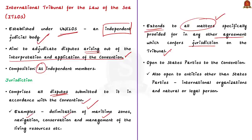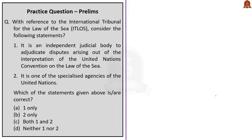The tribunal's jurisdiction also extends to all matters specifically mentioned in any other agreements that confer jurisdiction on the tribunal. Till date, 16 multilateral agreements have been concluded which confer jurisdiction on ITLOS. The tribunal is open to state parties to the convention, but in certain cases it is also open to entities other than state parties, such as international organizations and natural or legal persons. In this discussion, we saw about UNCLOS and the International Tribunal for the Law of Sea.